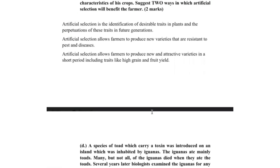Next, a farmer wishes to use artificial selection to alter the characteristics of his crop. Suggest two ways in which artificial selection will benefit the farmer. I want to remind you here of the definition of artificial selection. It is the identification of desirable traits in plants and the perpetuation of these traits in future generations.